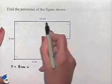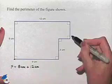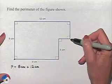If we move across, we see that we have 12 centimeters to add to that. But as we start to move down, we notice that we don't have that length.